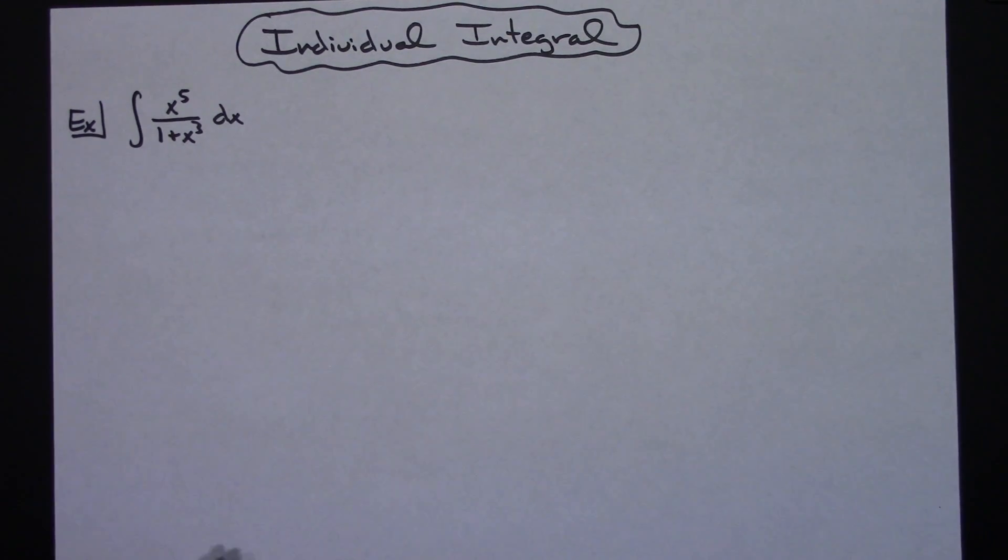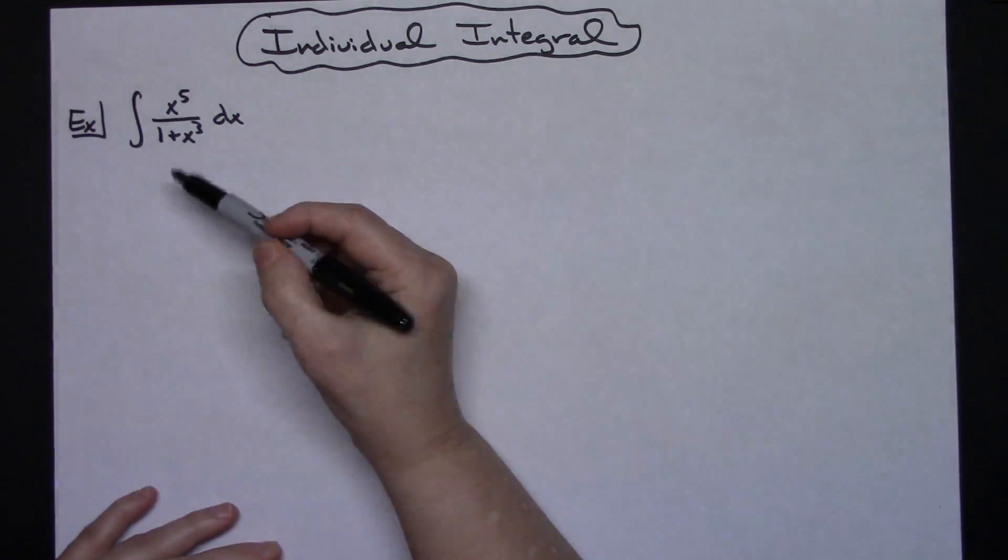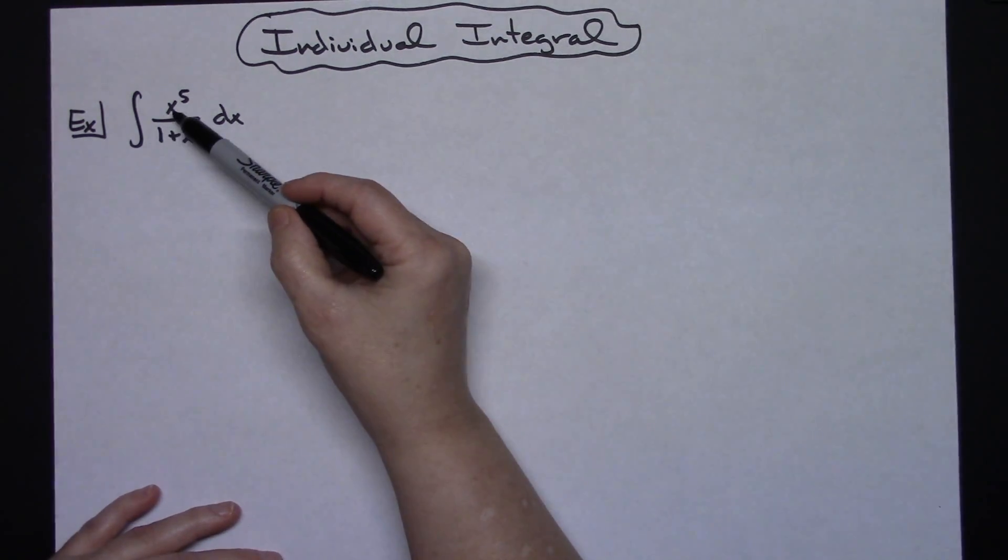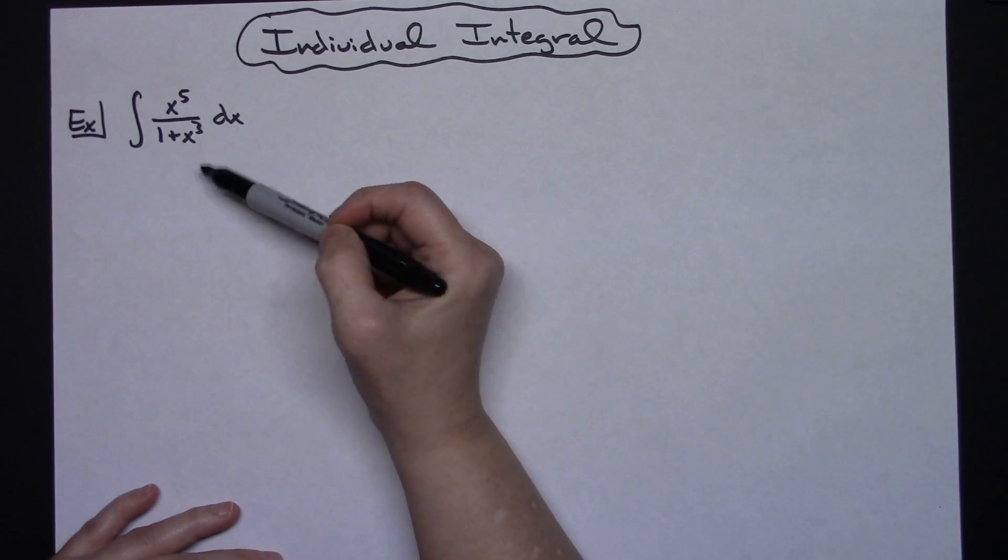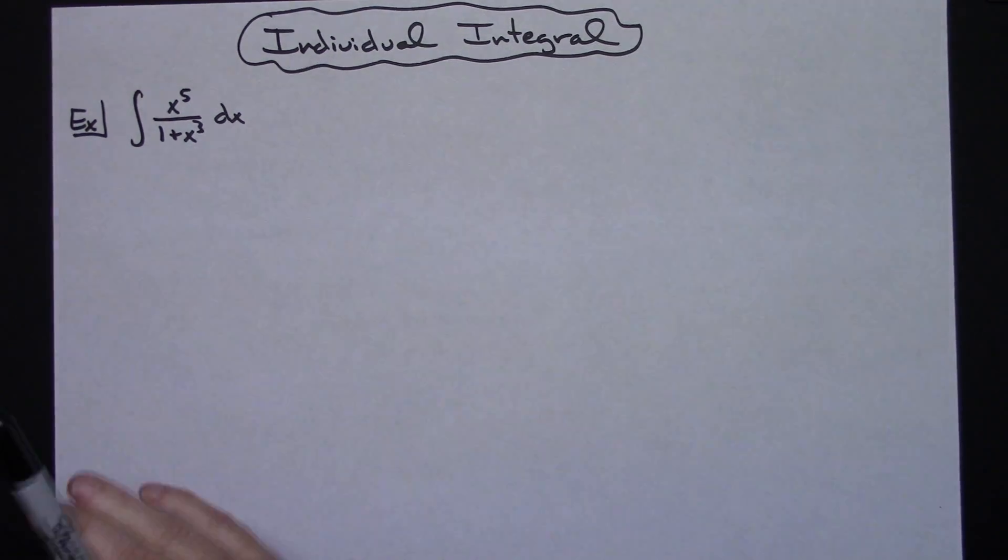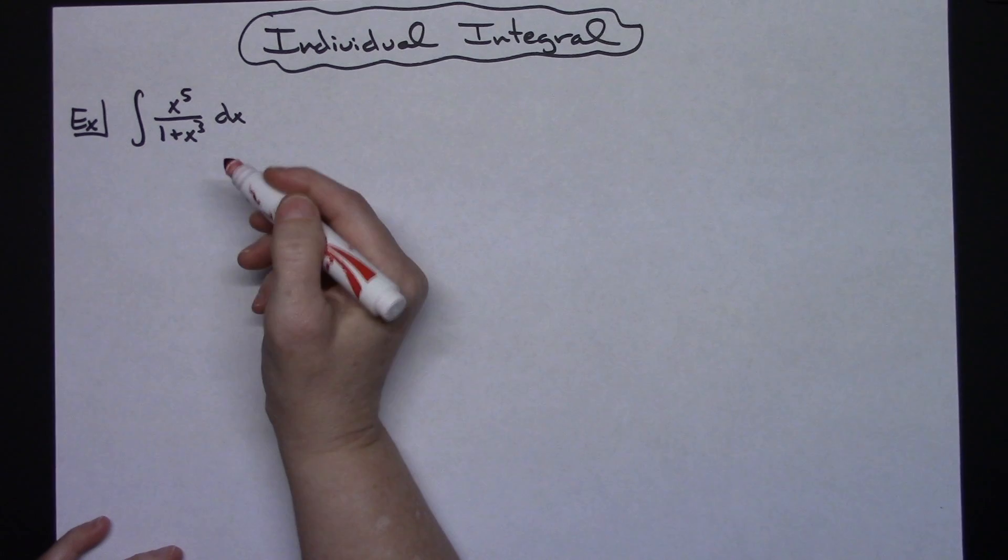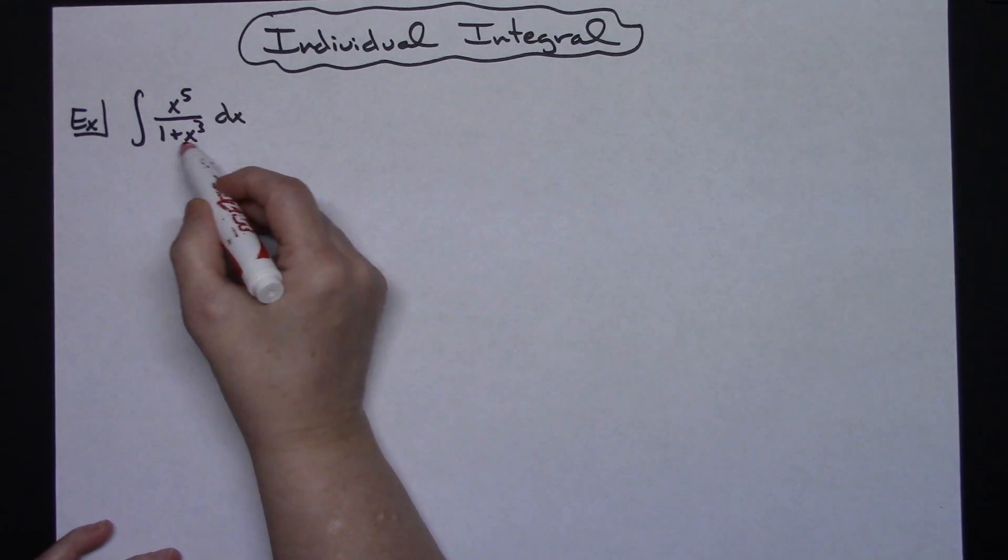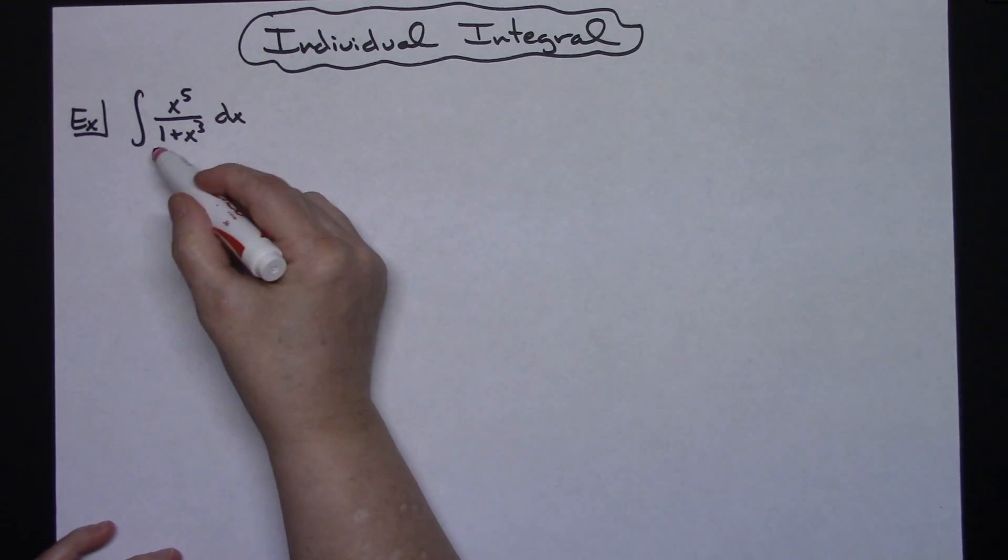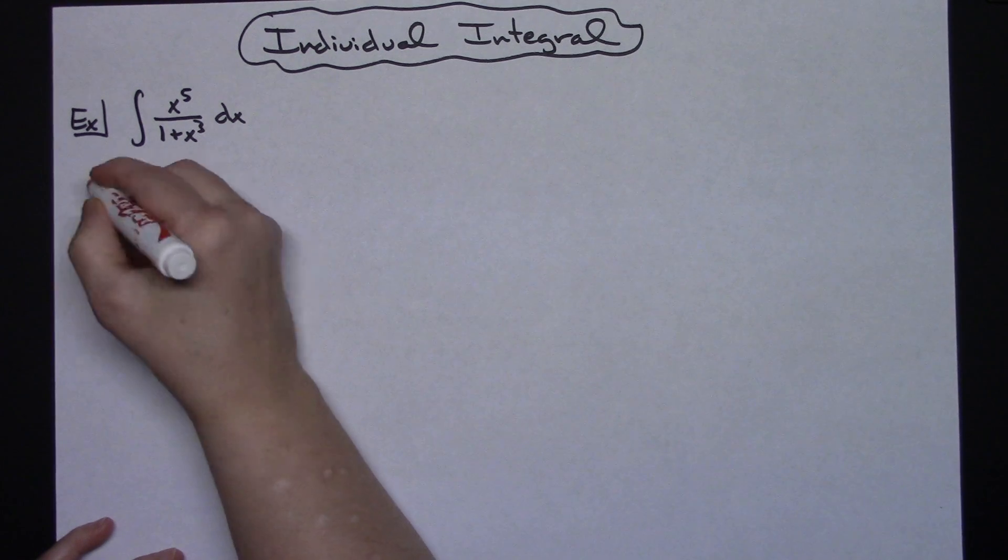In this video we're going to take a look at an individual integral. It's going to involve some u-substitution and would probably be typically found in a calc 1 class. We've got the integral of x to the fifth over 1 plus x to the third dx. Knowing that this is going to be a u substitution, we're going to look at that denominator and let our u be equal to that denominator.